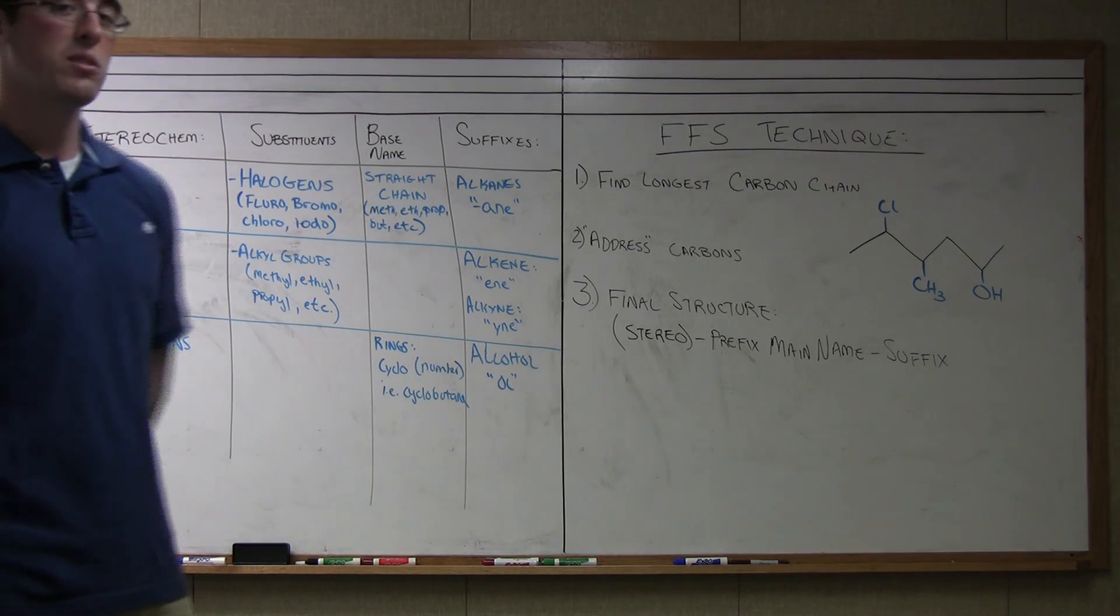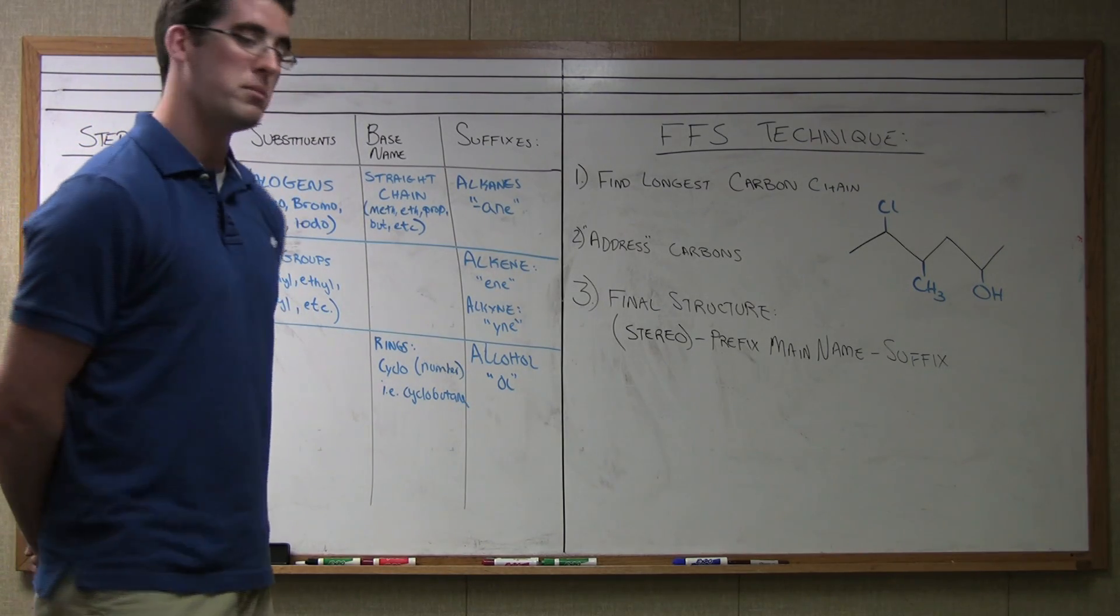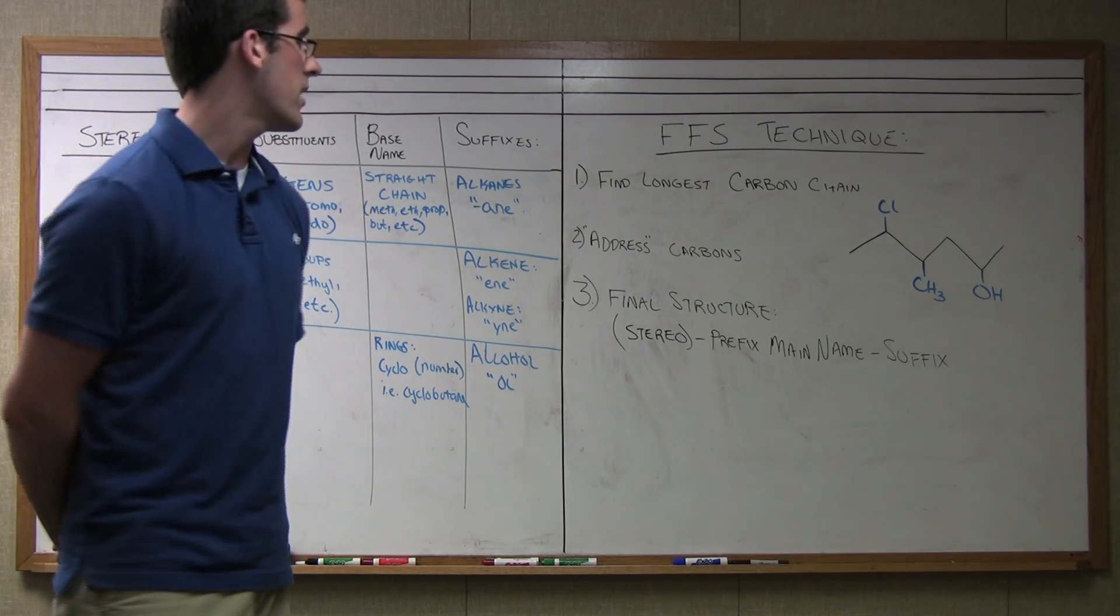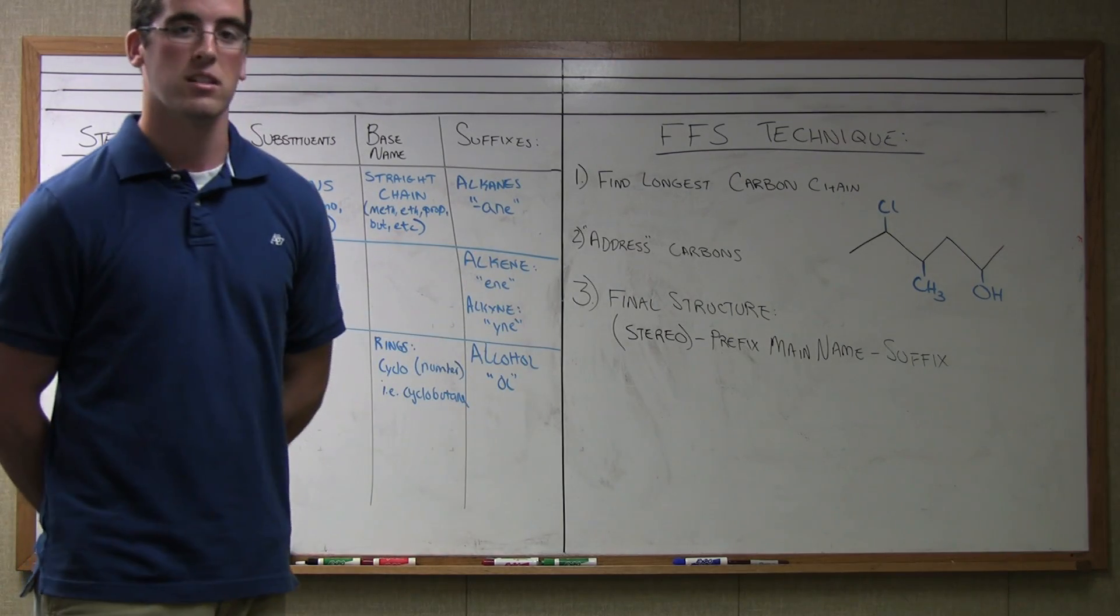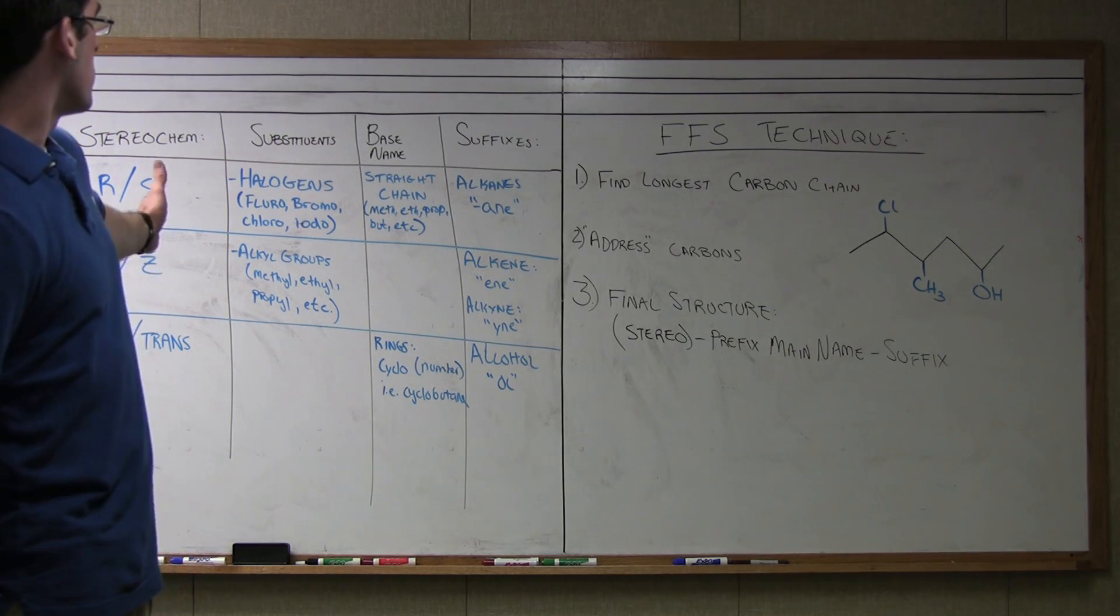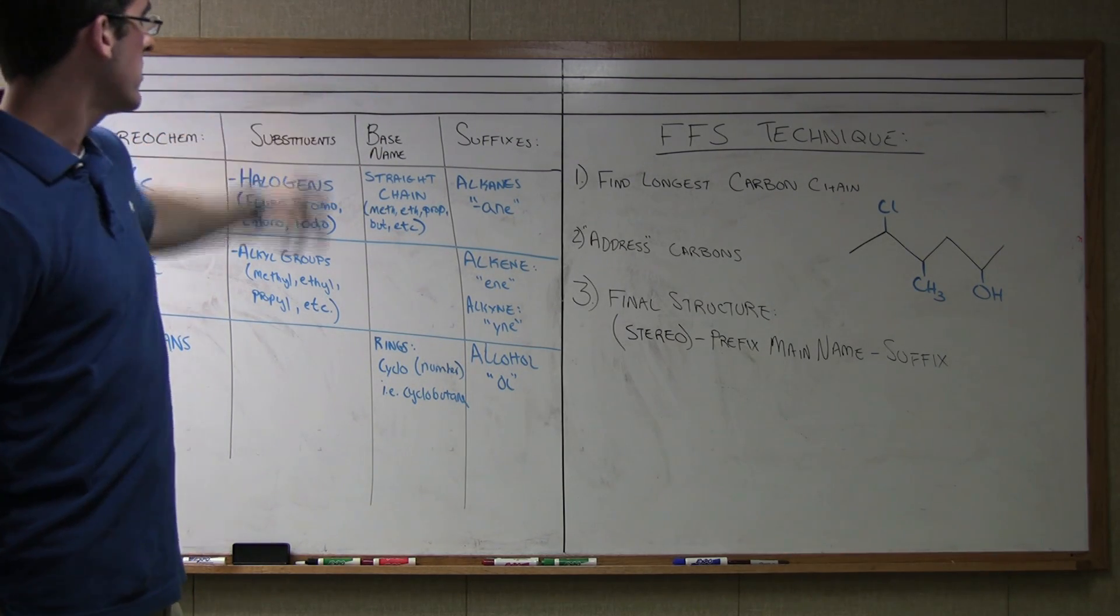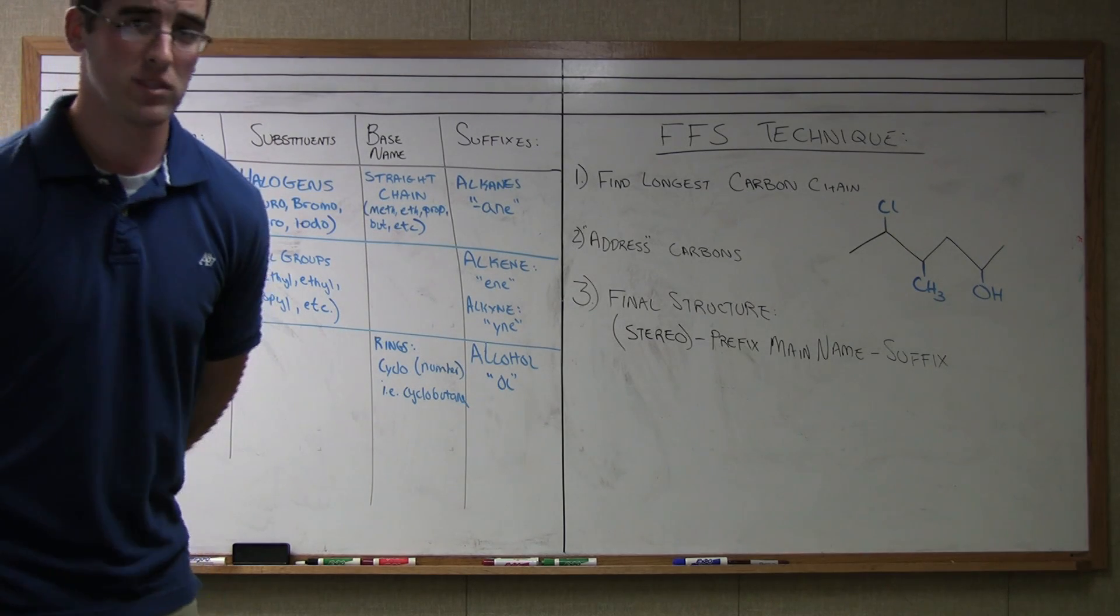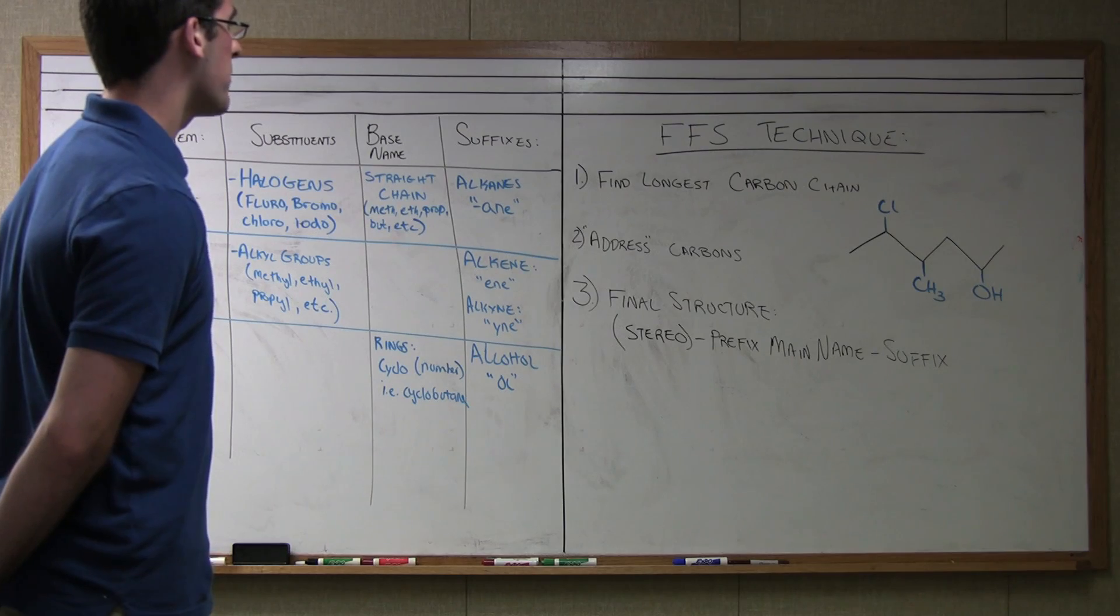As you can see, we have the FFS technique, which is three steps to identifying the compound we're naming and then how to execute that and get to the final structure. We look at our table here. We have four sections: the stereochemistry, the substituents, the base name, and the suffixes. Just check the chart in the course pack because it's much more detailed.